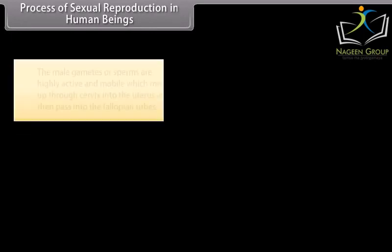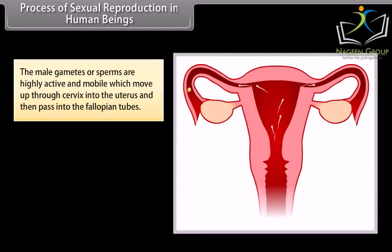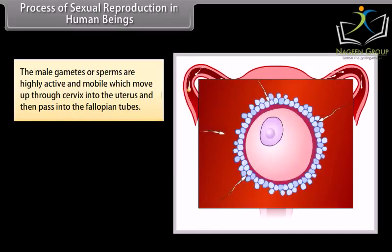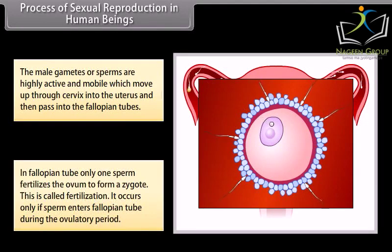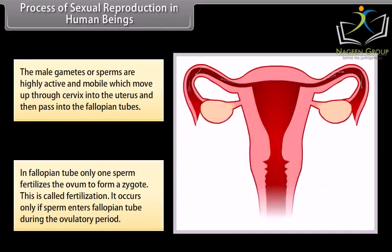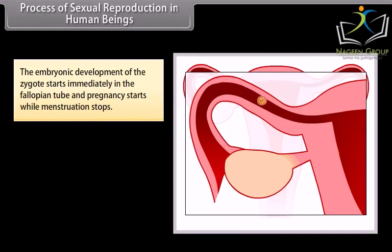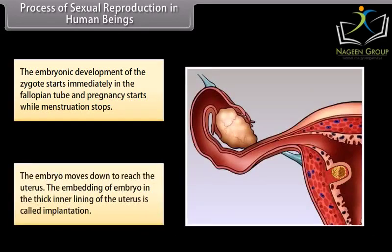The male gametes or sperms are highly active and mobile, moving up through the cervix into the uterus and then into the fallopian tubes. In the fallopian tube, only one sperm fertilizes the ovum to form a zygote — this is called fertilization, and it occurs only if the sperm enters the fallopian tube during the ovulatory period. Embryonic development of the zygote starts immediately in the fallopian tube, and pregnancy starts while menstruation stops. The embryo moves down to reach the uterus, and the embedding of the embryo in the thick inner lining of the uterus is called implantation.